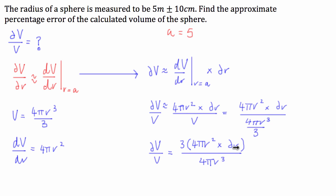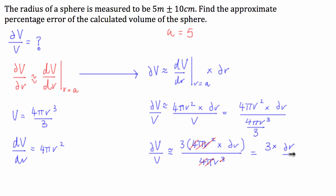We can multiply out the top and see what cancels with the bottom. The 4s from the top and bottom cancel, the π's also cancel, and the r² cancels with two of the r's in the denominator, leaving just one r. We're left with 3 times Δr in the numerator. So the percentage change in volume can be approximated by 3 times Δr over r.